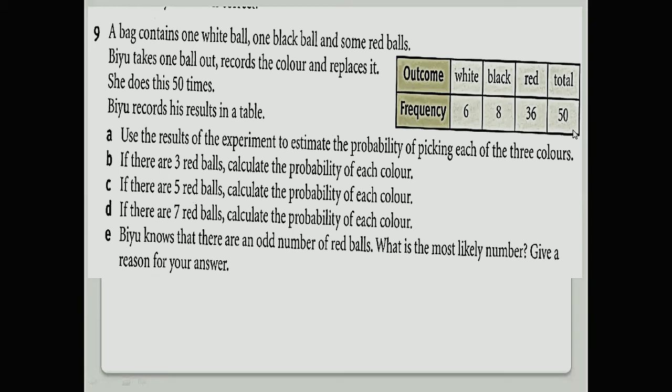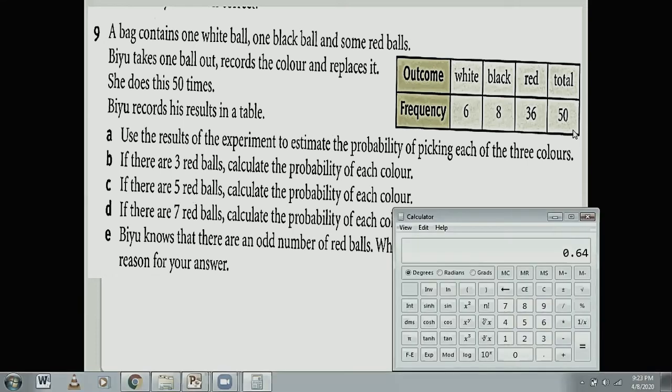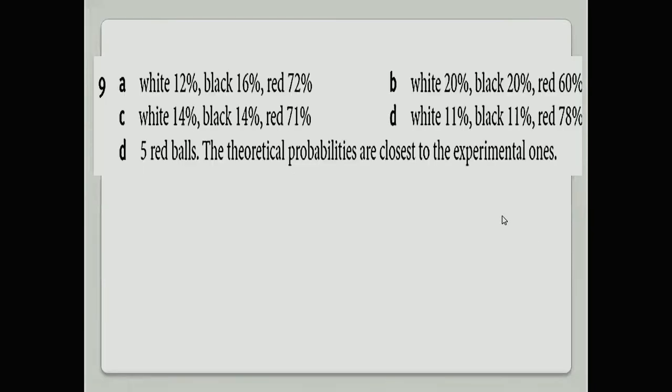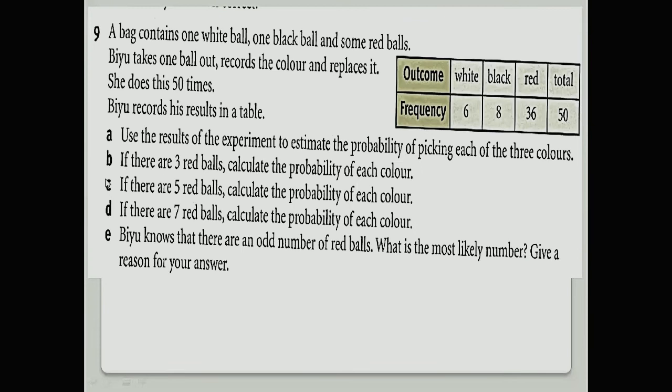First you are finding the probability of all colors. 6 divided by 50, you will get your answer 12 percent. Next time, 8 divided by 50, you will get 16 percent, and 36 divided by 50, you will get 72 percent. Let's check: part A, 12, 16, and 72.